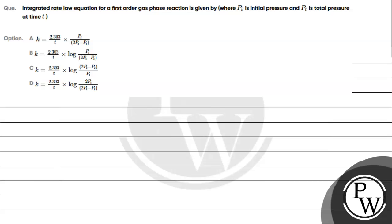Hello, let's read this question. The question says integrated rate law equation for a first order gas phase reaction is given by initial pressure and total pressure. Let's take a look at the options to see which one is correct.